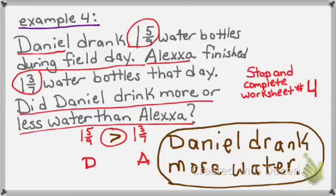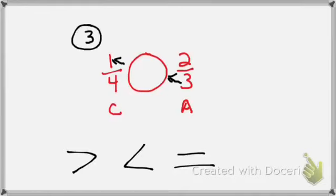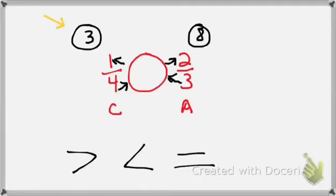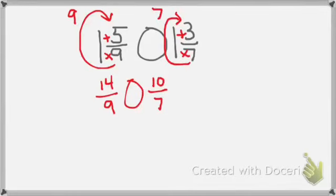Please stop the video and complete worksheet number 4 right now. Let's review. To compare fractions, we write the first given fraction, a comparison circle, and the second fraction. Then we cross-multiply, bottom to top on the diagonal, and write our answer above it, circling it. We cross-multiply on the other diagonal, bottom to top, write our answer, and circle it. Then we are simply comparing those two numbers in the circles. In this case, 3 is less than 8, so the answer is less than. Remember, if we have mixed numbers, first we need to change our mixed numbers into improper fractions. And once we have full fraction by full fraction, we can compare.